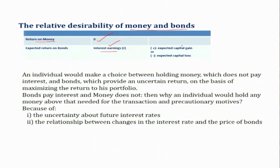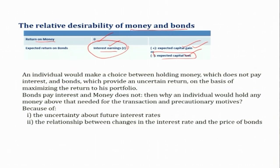In addition to interest earnings, bonds also carry either capital gain or capital loss. Capital gain happens when the rate of interest declines in the future, causing bond price to increase, resulting in capital gain in addition to interest earnings. In contrast, if the rate of interest increases in the future, bond price will decline, resulting in capital loss. So the expected return on bonds includes interest earnings plus either capital loss or capital gain, and this is subject to fluctuations in the rate of interest.